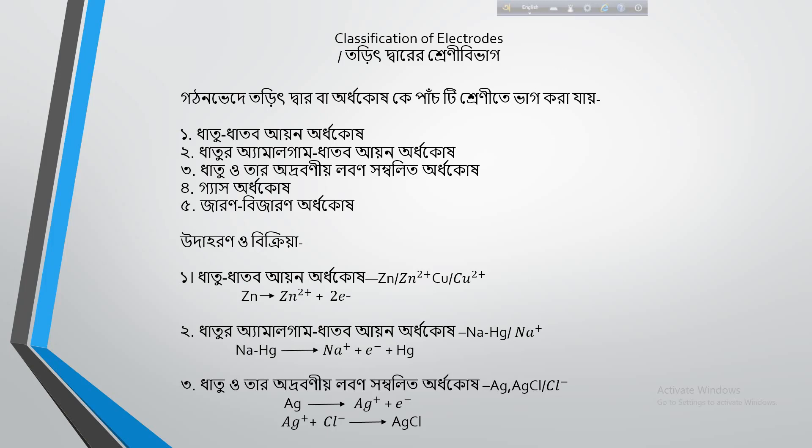The next type is the metal amalgam–metal ion electrode. In this type, one electron moves and sodium is involved. This is an amalgam electrode where the metal is in its amalgam form in contact with a solution of its metal ions.